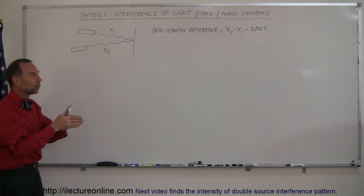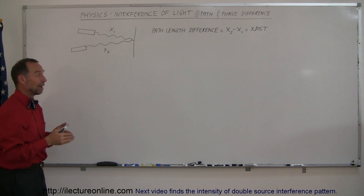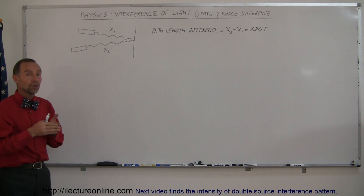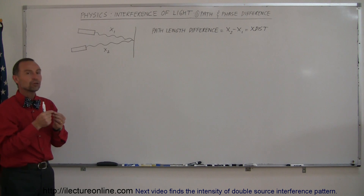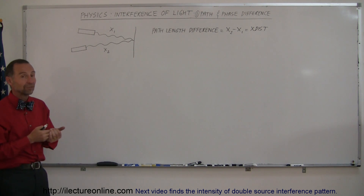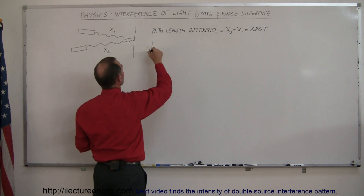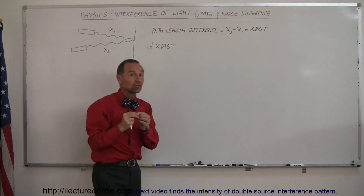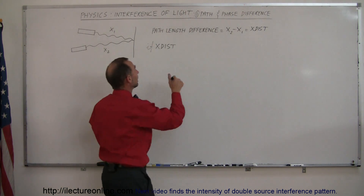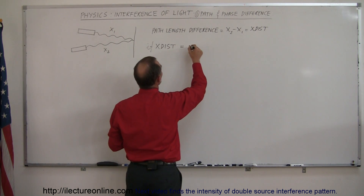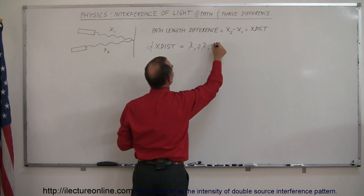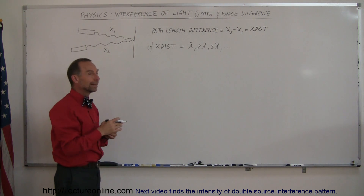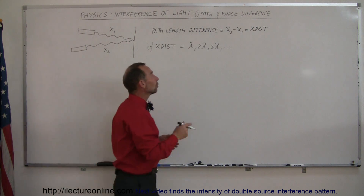When the two waves of light come together, they will interfere with each other. We can have either constructive interference or destructive interference. Constructive interference is obtained when the path length difference is equal to an integer number of wavelengths. For example, if the extra distance traveled — defined as the difference between x2 and x1 — is equal to one wavelength, two wavelengths, three wavelengths, and so forth, then the waves are in phase when they arrive at the same point, and you'll see constructive interference.